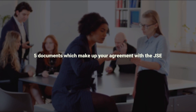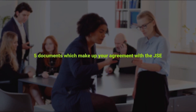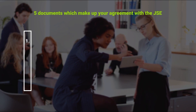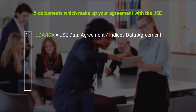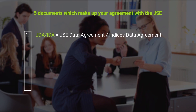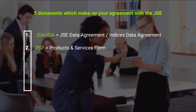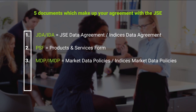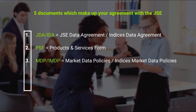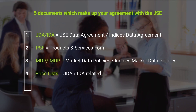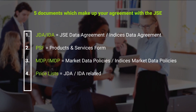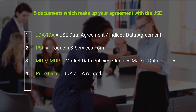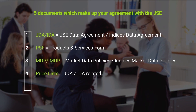There are five documents which make up your agreement with the JSE. They are: the JSE Data Agreement or Indices Data Agreement, the Product and Services Form, the Market Data Policies or the Indices Market Data Policies, the JDA (JSE Data Agreement) or IDA (Indices Data Agreement), as well as related price lists.